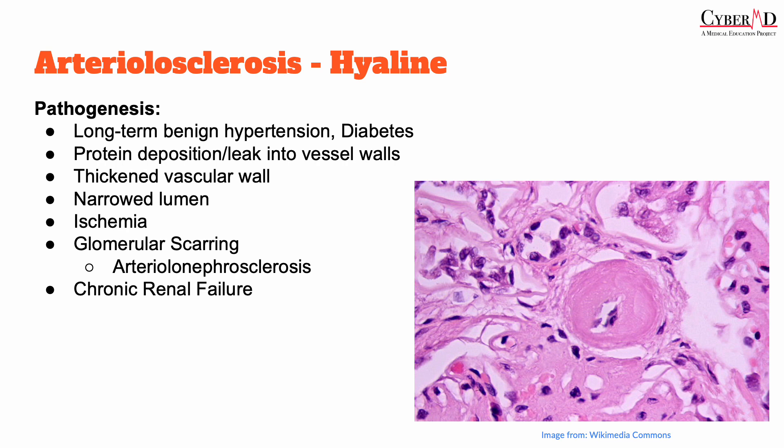With regards to diabetes as the etiology, high levels of blood glucose or blood sugars can lead to damage of the walls of the vasculature. The pathway in its entirety is much more complex, but you can conceptualize this as high sugar contents in the blood damaging the cells and making the vasculature leaky, allowing proteins to seep out and deposit.